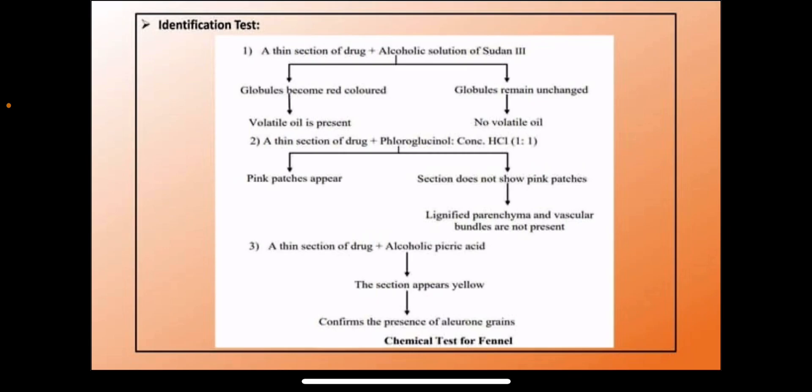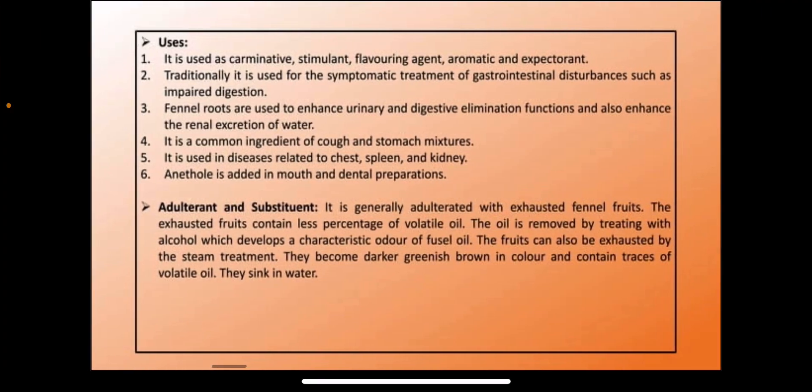Third identification test: a thin section of the drug is treated with alcoholic picric acid. The section appears yellow in color, which shows the presence of aleurone grains.